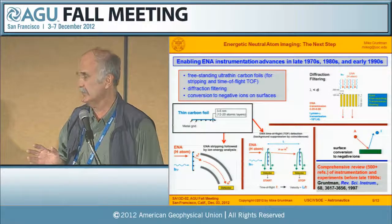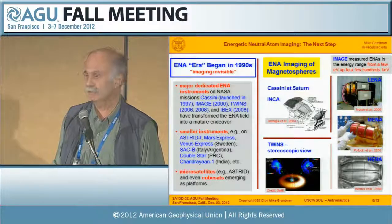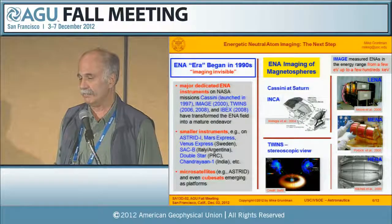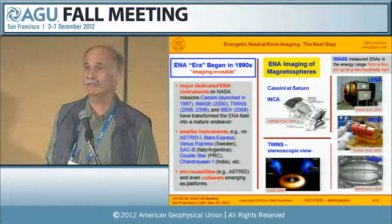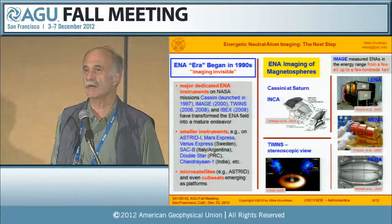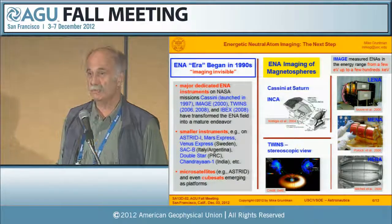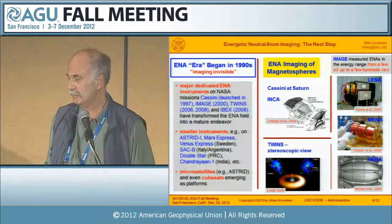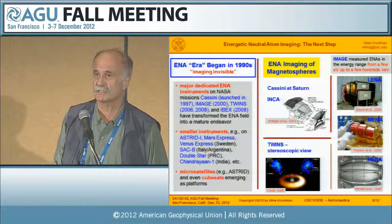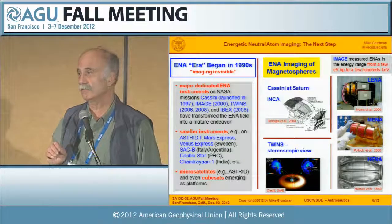A comprehensive review with 500-plus references was published in 1997 in the Review of Scientific Instruments. In the 1990s, we finally got the era of ENAs. Major dedicated NASA missions put ENA imaging in the forefront of research. Cassini had the INCA instrument measuring ENAs at Saturn's magnetosphere. The NASA IMAGE mission carried three instruments covering ENA fluxes across energy ranges from a few electron volts up to a few hundred kiloelectron volts. TWINS made the first attempt at stereoscopic imaging of magnetospheres. Smaller missions also contributed importantly, with a number of countries involved — Astrid, Mars Express, Mars Venus, SAG-B, Double Star, and Chandrayaan. ENAs are now also being introduced on microsatellite and even CubeSat platforms.